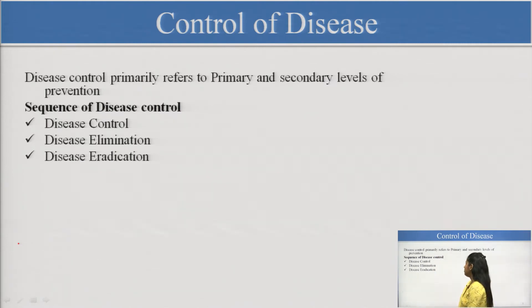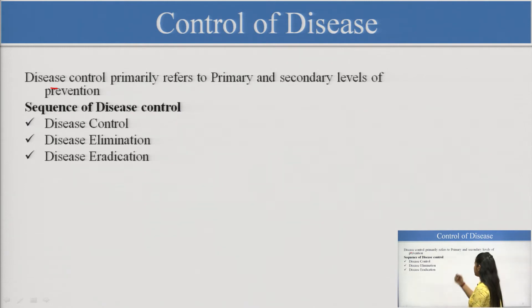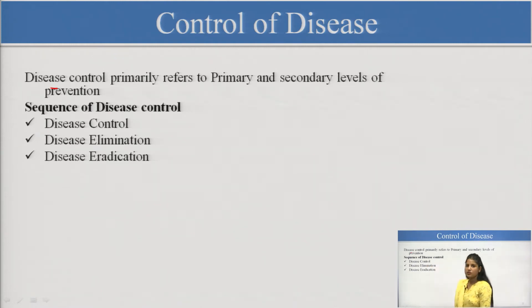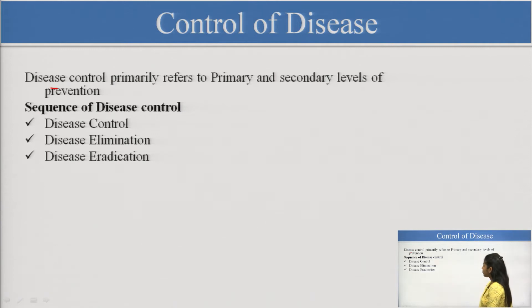Disease control primarily refers to the primary and secondary level of prevention. There are different levels of prevention — tertiary is not included here. In the tertiary prevention, we are eliminating complications of a disease. Disease control targets the disease at early phases — the primary or the secondary levels.